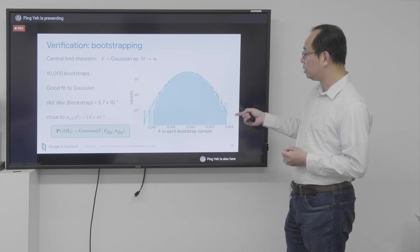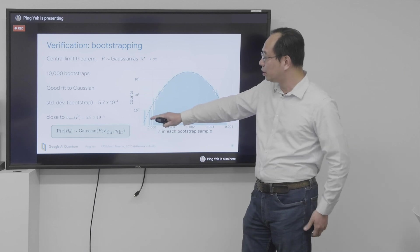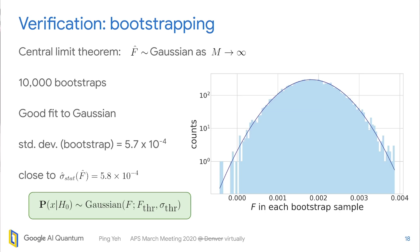So here we know that the null hypothesis PDF is a Gaussian with our theoretical, I mean, the threshold fidelity of 0.1% and standard deviation of theoretical prediction.